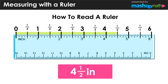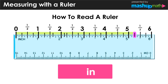In this case we have a length of four and one half inches. Now what if we push our measurement a little bit further so that it's in between a whole number and a one half? In this case we're in between five and five and a half, and the markings in between these values are each worth one quarter.